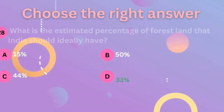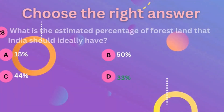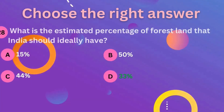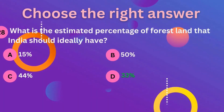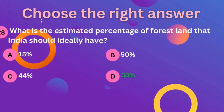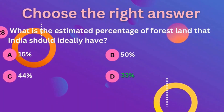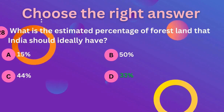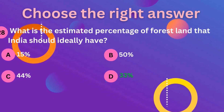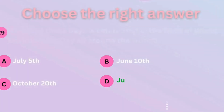Question 28: what is the estimated percentage of forest land that India should ideally have? So D is the correct answer — that is 33 percent.